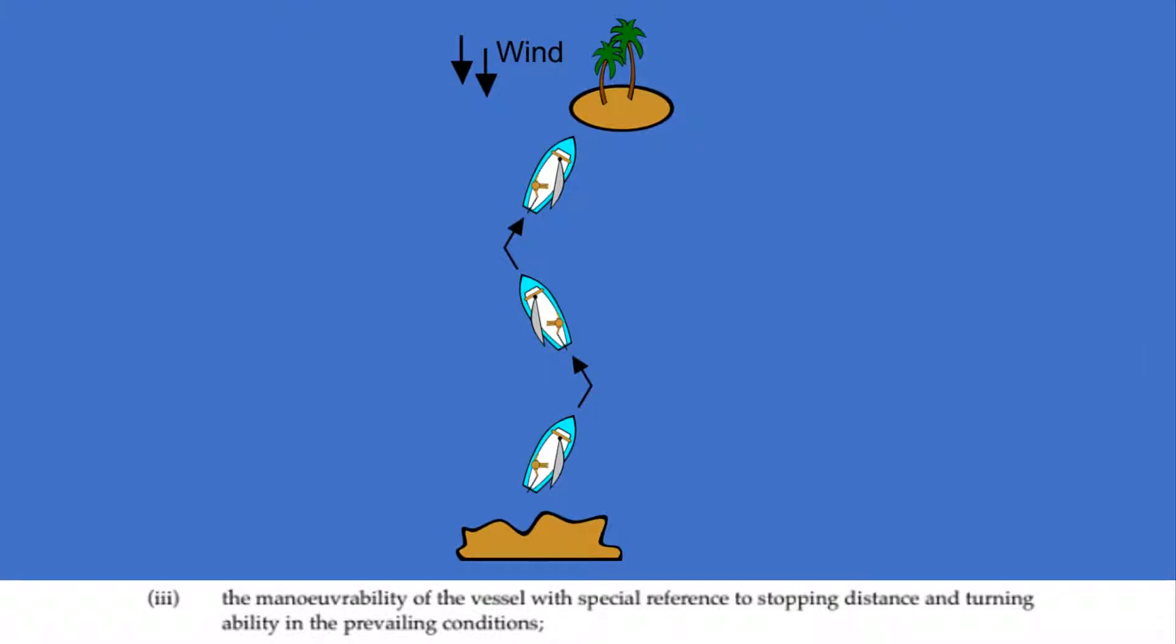An extra consideration with sailing vessels, is the fact that they can't go directly into the wind, so they're hampered in their manoeuvrability straight away, by having 45% of the sea room that they can't use.